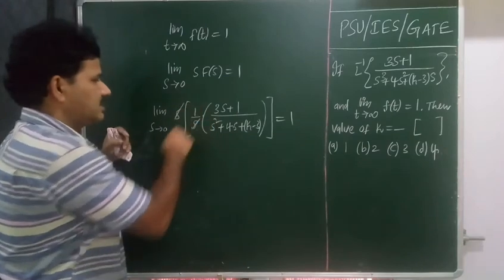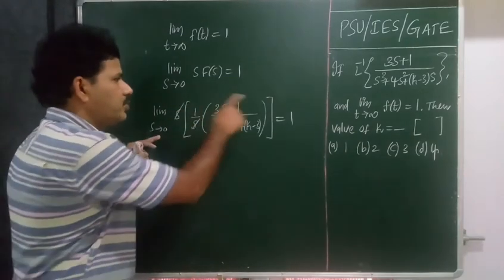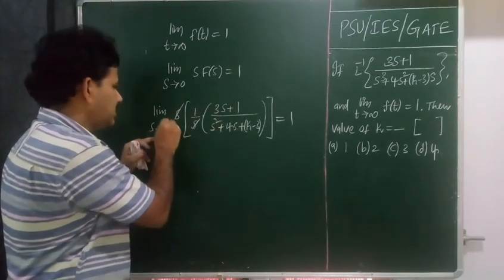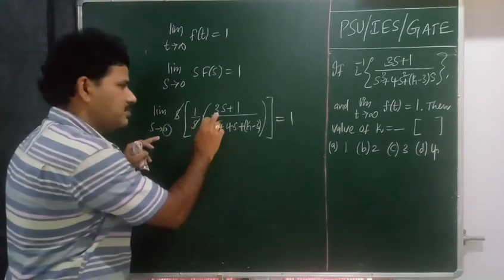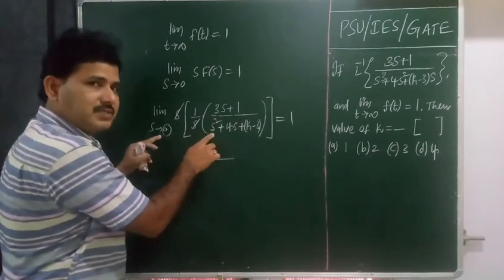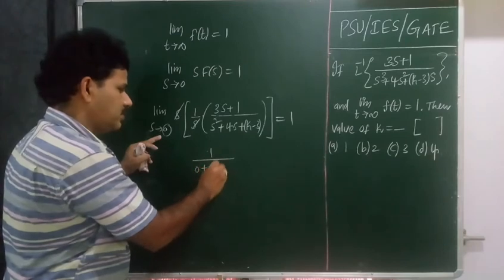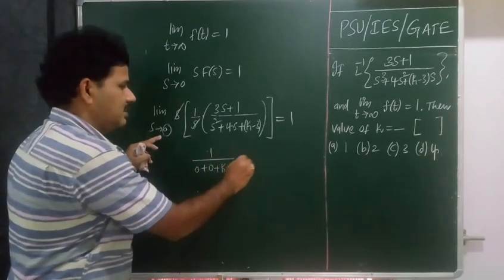Here s is cancelled. So where you have s, that s is replaced with 0: 0 plus 1, 1 over s replaced with 0, 0 square, 0 plus 4 times 0, 0 plus k minus 3 equals 1.